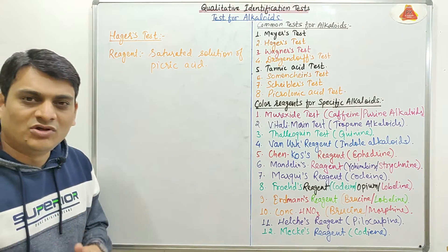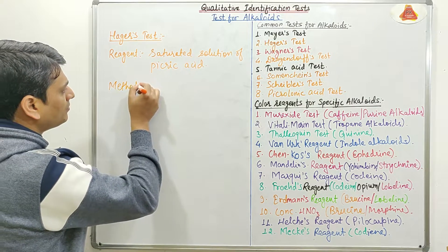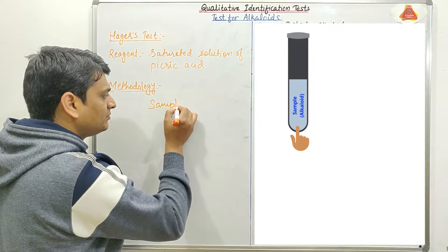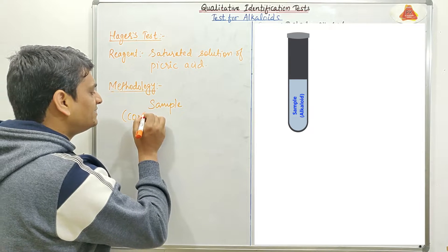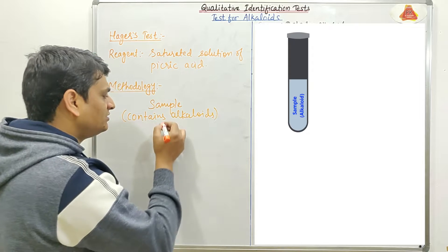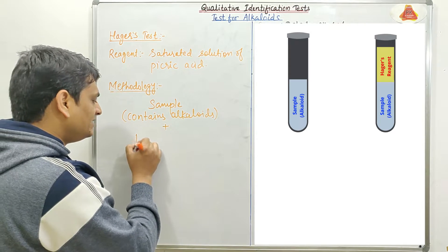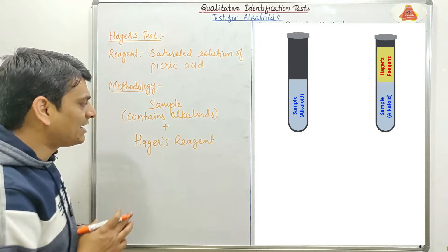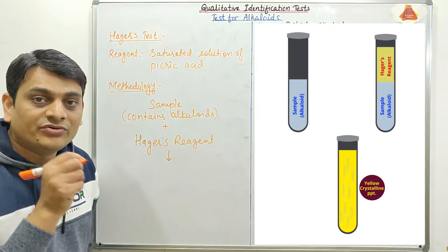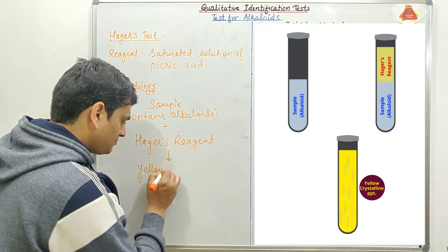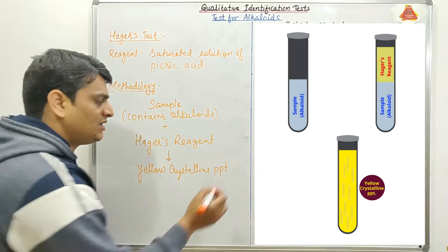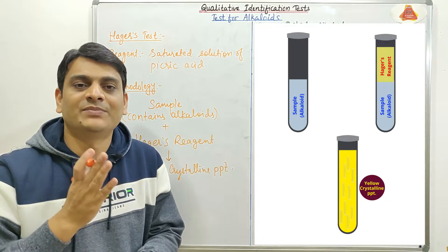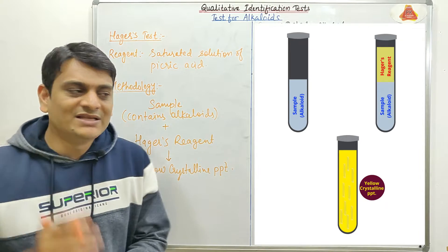Now coming to the methodology of this test, which is very simple. First we will take the sample which contains alkaloids. This sample will be treated with Hager's reagent. If alkaloids are present in our sample, it will give a yellow crystalline precipitate. If a yellow crystalline precipitate appears, it means alkaloids are present in our sample, as you can see here.